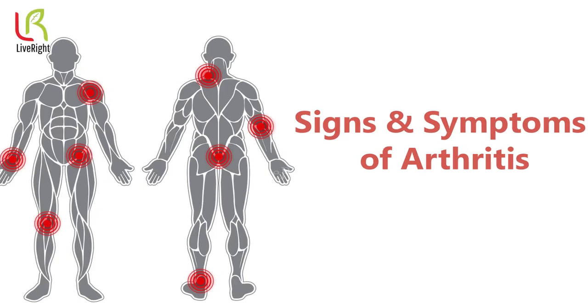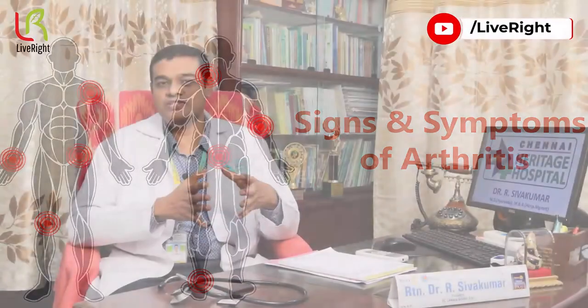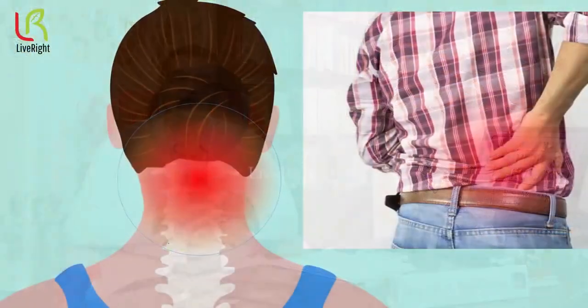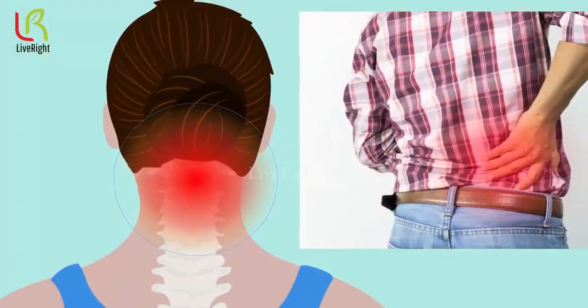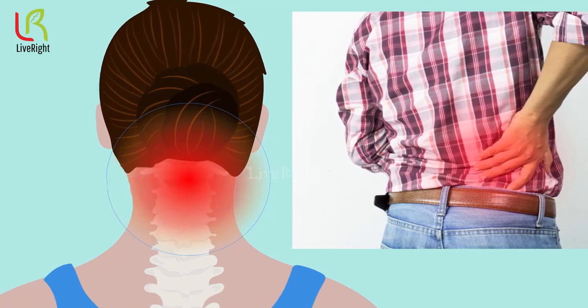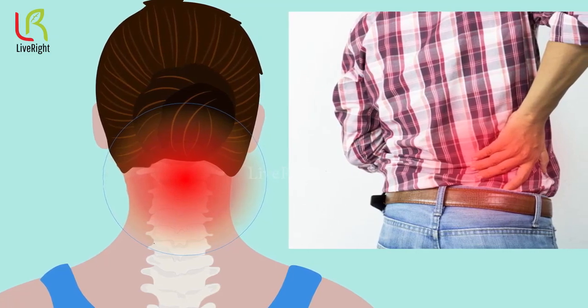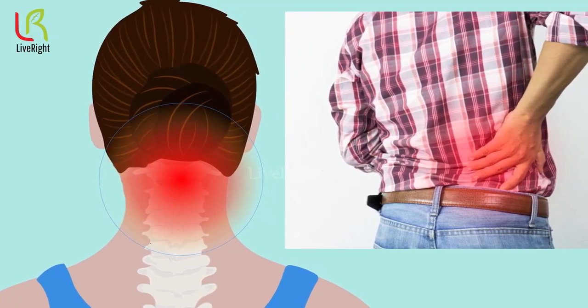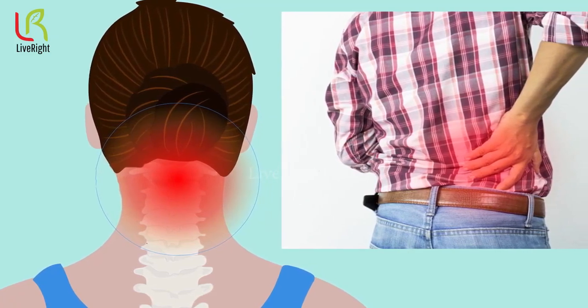Signs and symptoms — we will tell you about the signs and symptoms. What is the problem with knee joint? In the back-related problems, we will say back pain and neck pain.